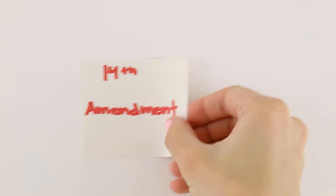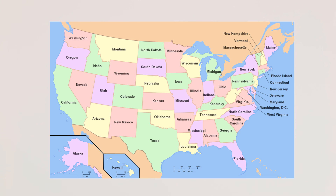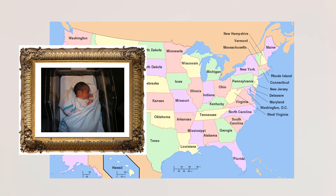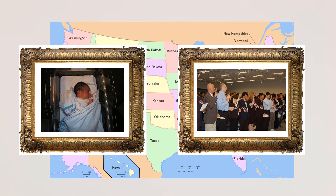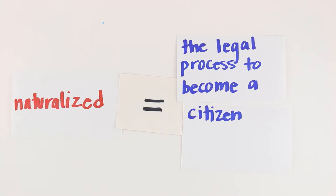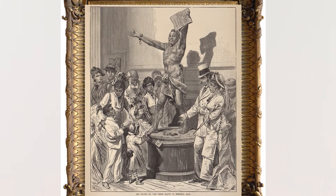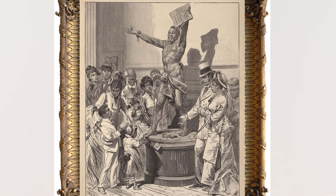The 14th Amendment defined who is considered a citizen of the United States. Anyone born or naturalized in the United States is considered a citizen. Naturalized means you were not born a citizen, but you have gone through the legal process of becoming a citizen. This allowed former slaves to officially be considered citizens of the United States.